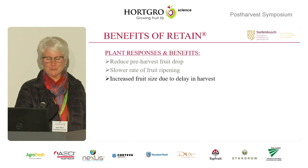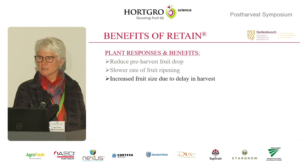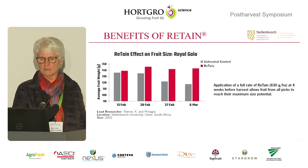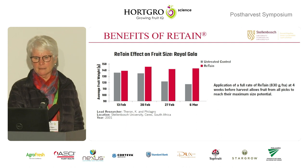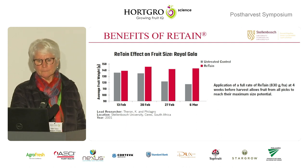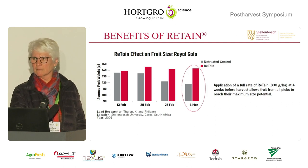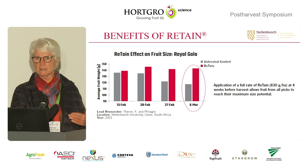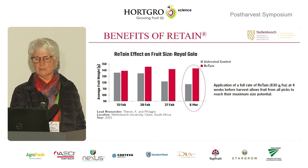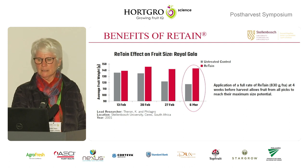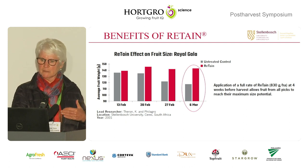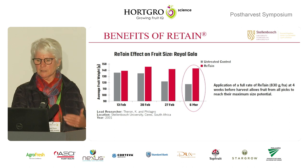We also find an increase in fruit size due to the delay in harvest, similar to what we see with Vista. Looking at Gala at the final harvest, the fruit has increased in size compared to fruit remaining on the control trees, simply because you've given the fruit the time to reach its full potential before doing the final pick.